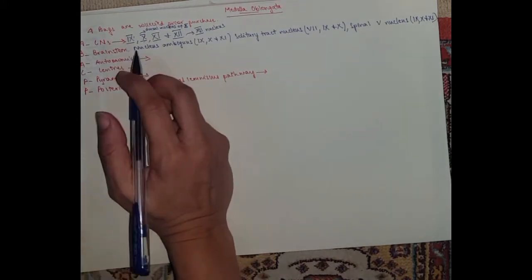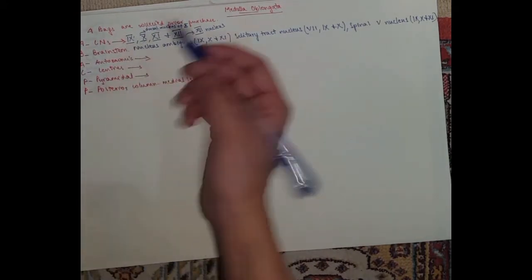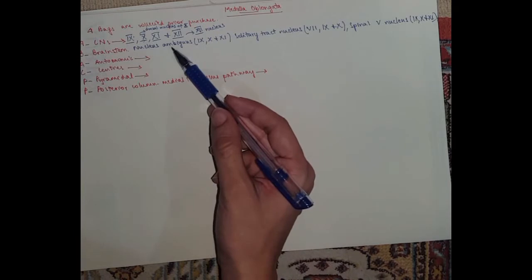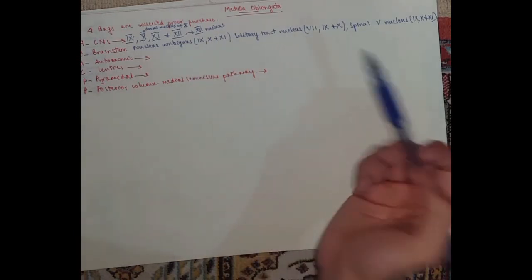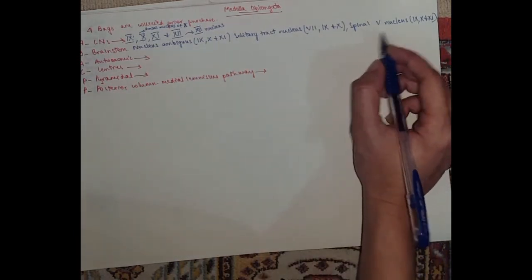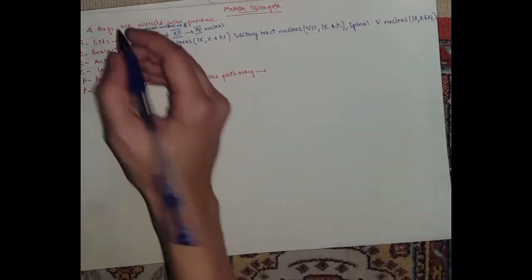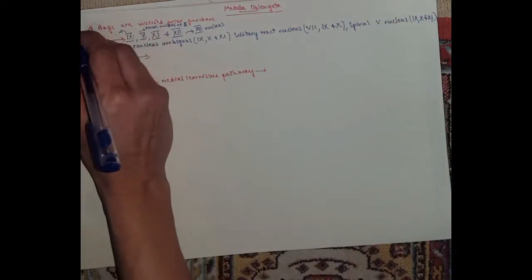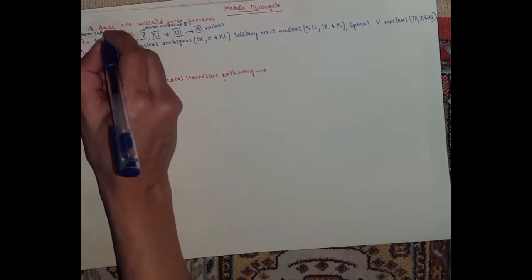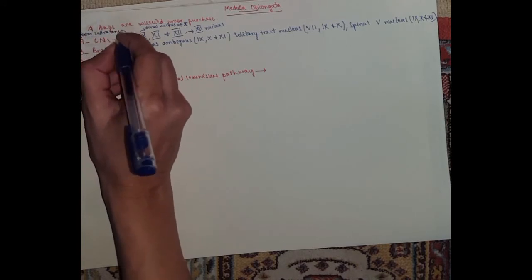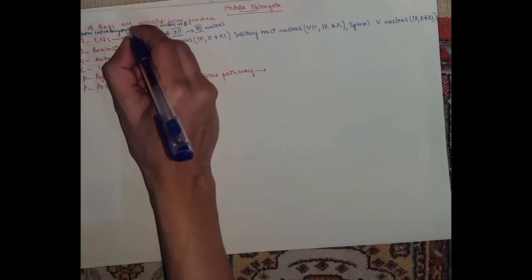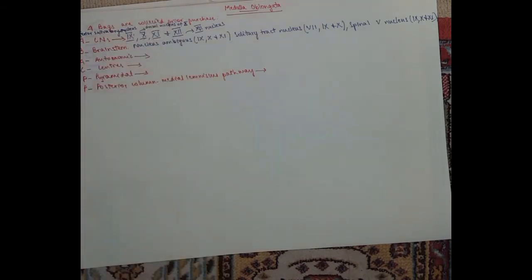And number 9, which is the glossopharyngeal, it's got the nucleus ambiguus, the solitary tract nucleus, the spinal trigeminal nucleus, and another one which is parasympathetic, the inferior salivatory nucleus. That's it.